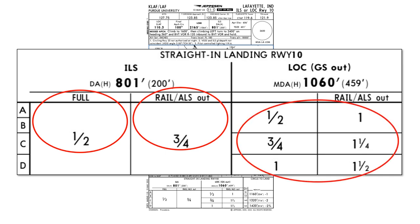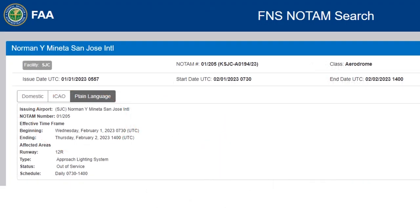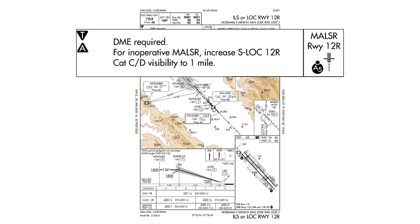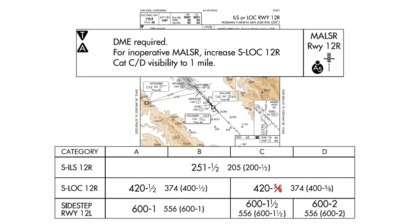If you don't want to shell out the money for the Jeppesen subscription, you'll have to be aware of how to find these standard changes to visibility minimums in the event of an equipment outage. Sometimes the FAA charts make life a little easier on you. Let's look at another airport — San Jose International — where we see a NOTAM that the approach lighting system for Runway 12R is out of service. On the approach plate for this one, there's a little more info given in the notes section. We see that when the MALSR is inop, we increase the localizer minimums for CAT C and D aircraft to one mile.